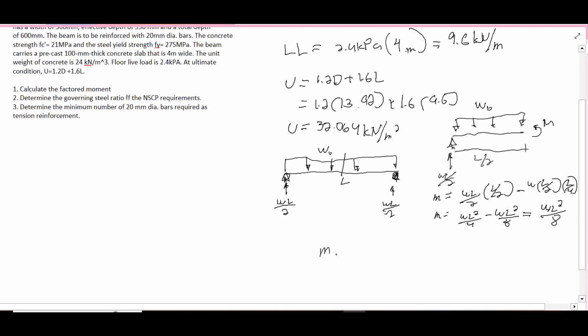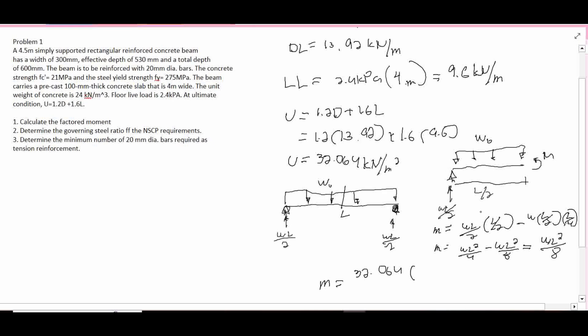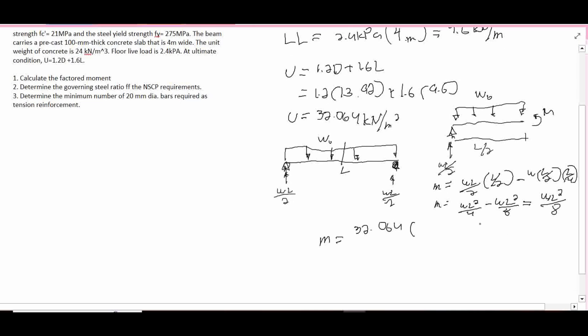So the maximum factored moment will be our distributed load 32.064 times the length, our beam length here is 4.5 meters, times 4.5 squared all over 8. So our ultimate moment MU will yield to 81.162 kilonewton meter. So this is our answer.